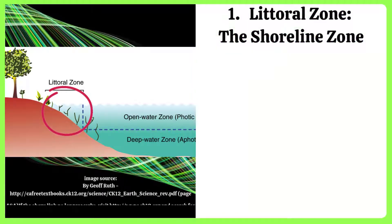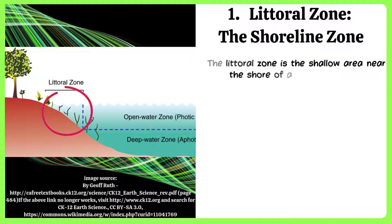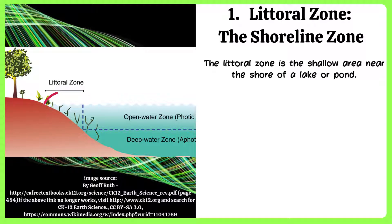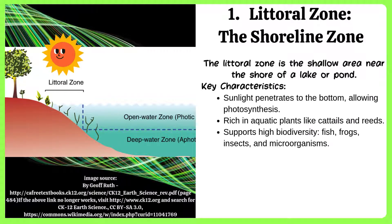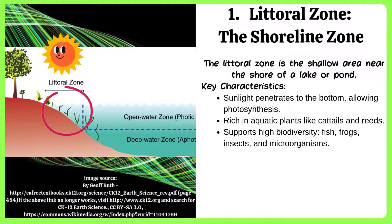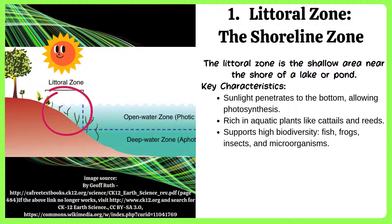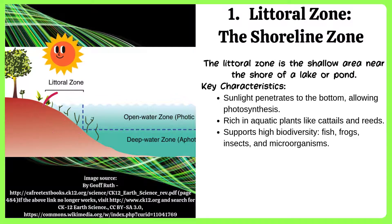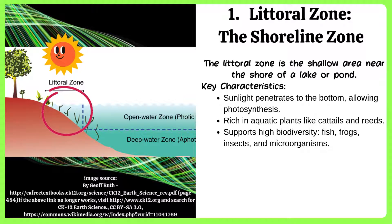Littoral zone — the shoreline zone. The littoral zone is the shallow area near the shore of a lake or pond. It has the following key characteristics: sunlight penetrates to the bottom, allowing photosynthesis. It is rich in aquatic plants like cattails and reeds. It supports high biodiversity including fish, frogs, insects, and microorganisms.